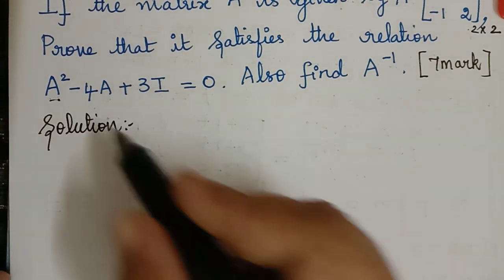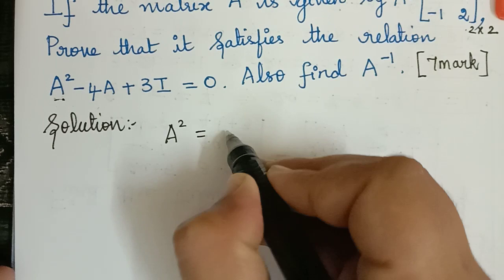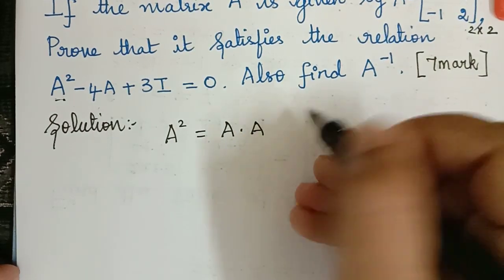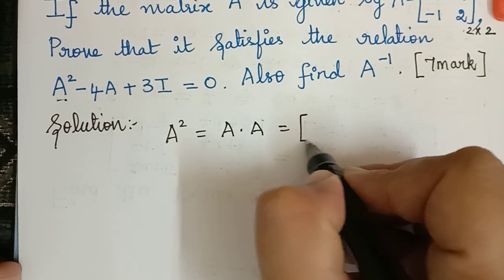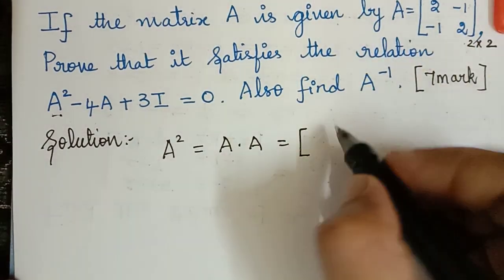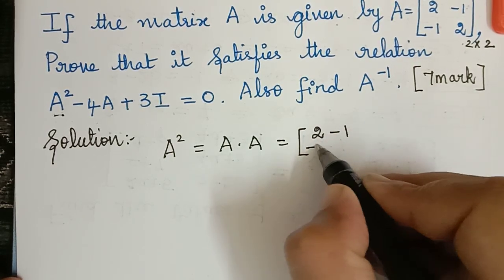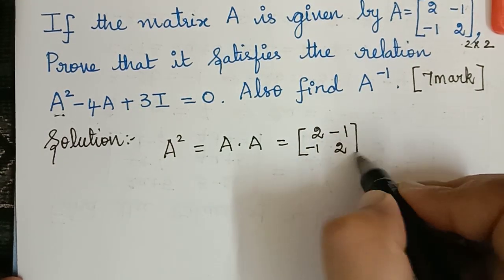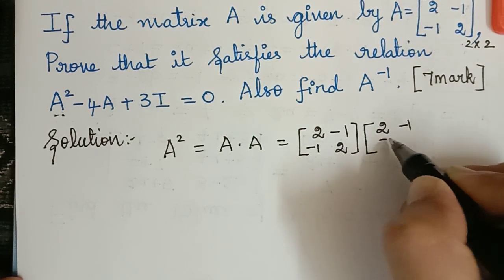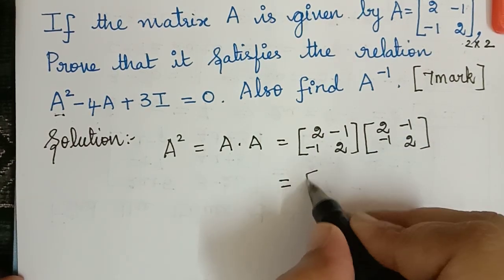First we have to find A squared. A squared is equal to the multiplication of matrix A with itself. So that is A = [2, -1; -1, 2] multiplied by [2, -1; -1, 2]. Let us do the matrix multiplication now.